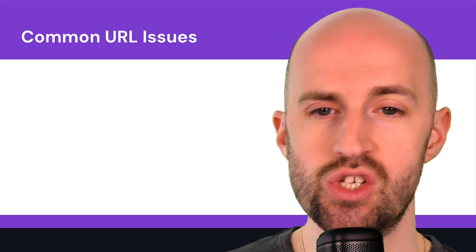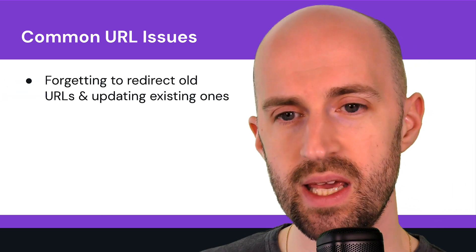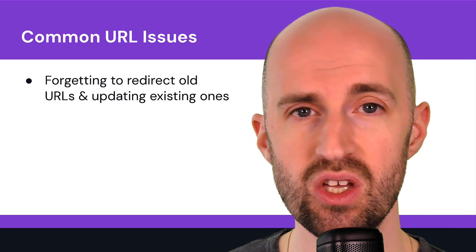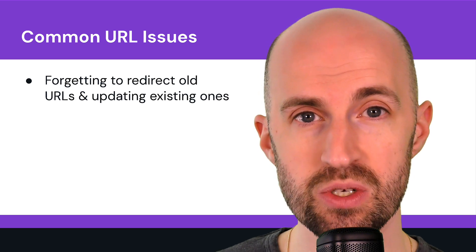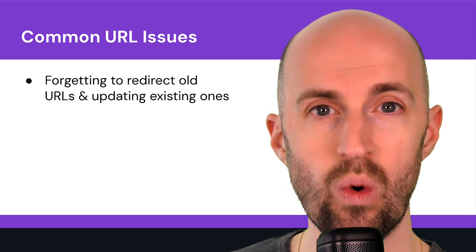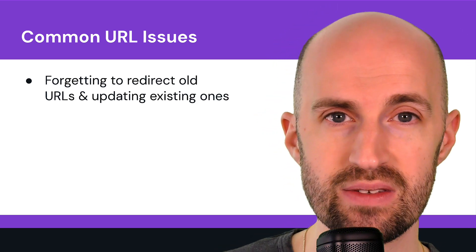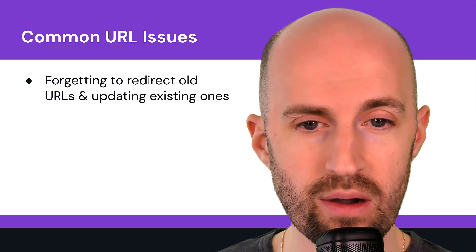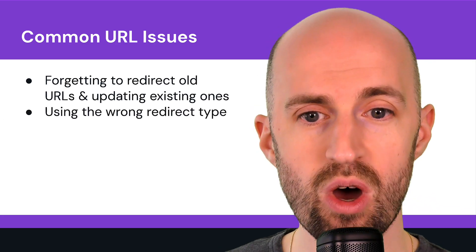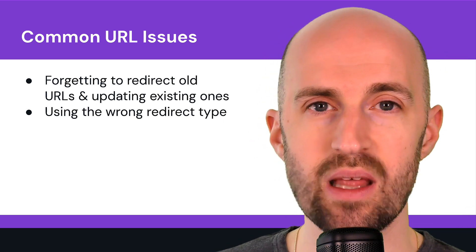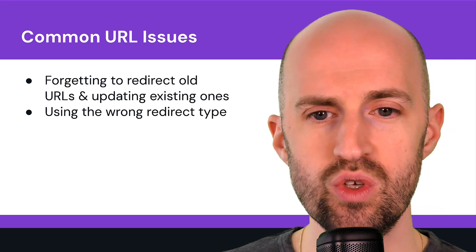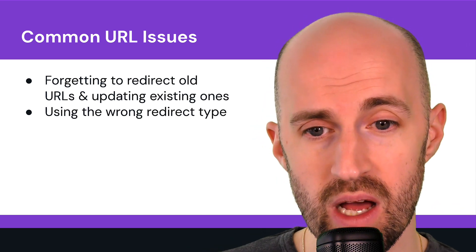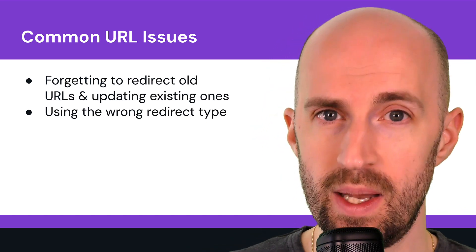Make sure the structure is consistent, logical, and predictable. What are some common URL issues you can come across? Firstly, forgetting to redirect old URLs when updating existing ones. If you change a page and update its URL, you need to make sure you 301 — or permanent redirect — the old URL so it passes on any link equity gleaned from backlinks and doesn't end in a 404 error. Also, using the wrong redirect type: for example, using a 302 temporary redirect when you actually intend to move the page permanently — in that case, use a 301 permanent redirect.